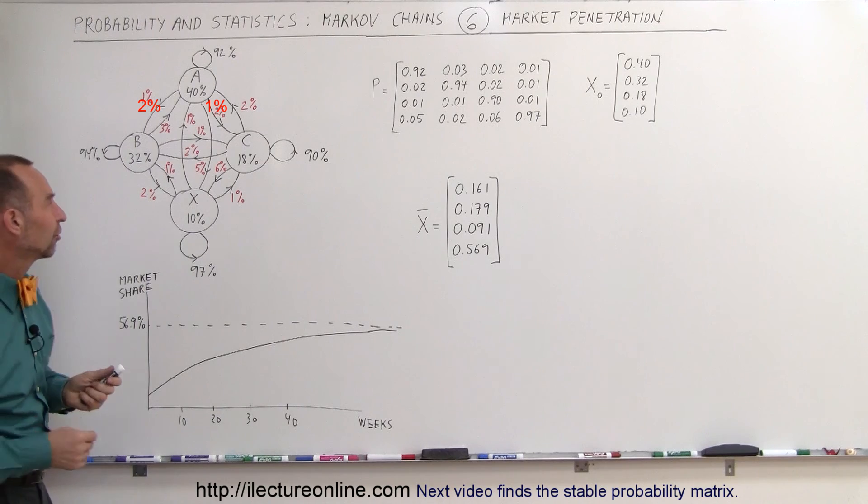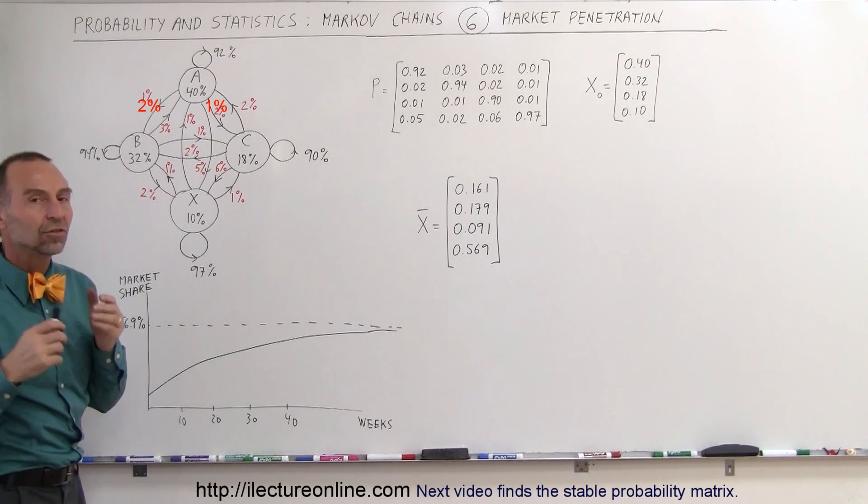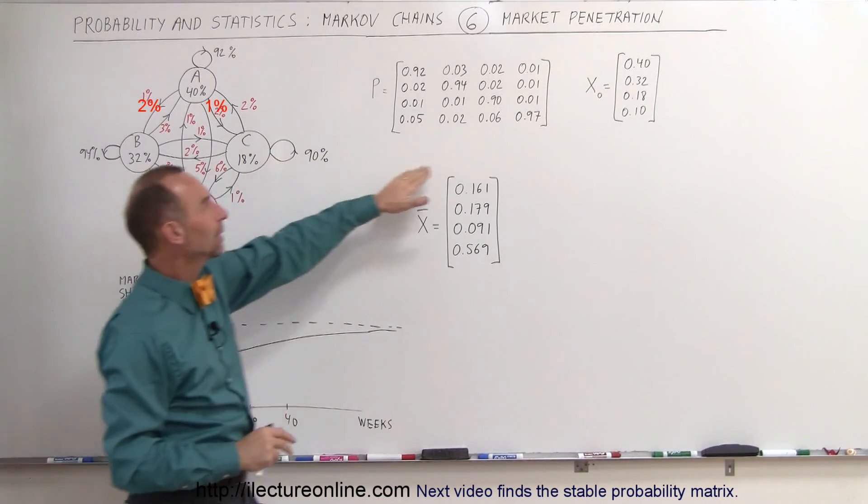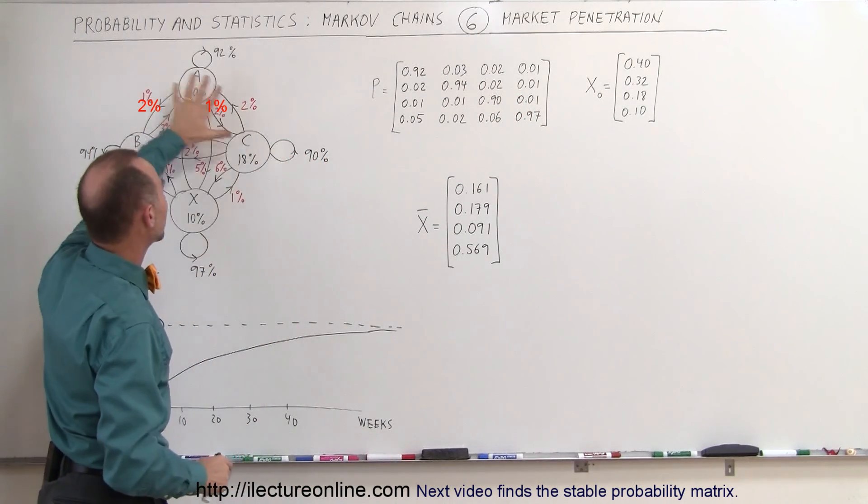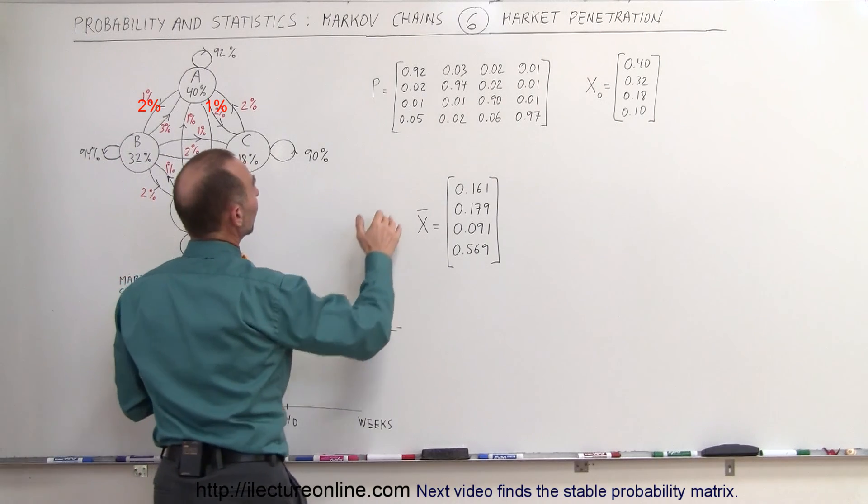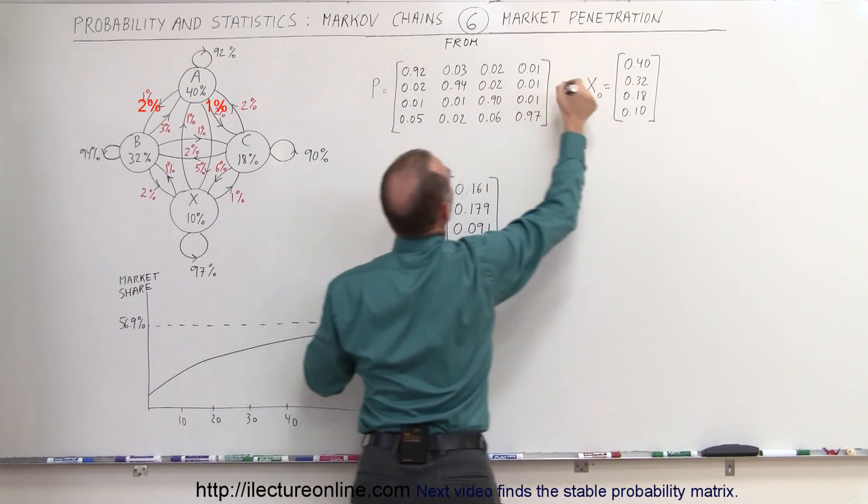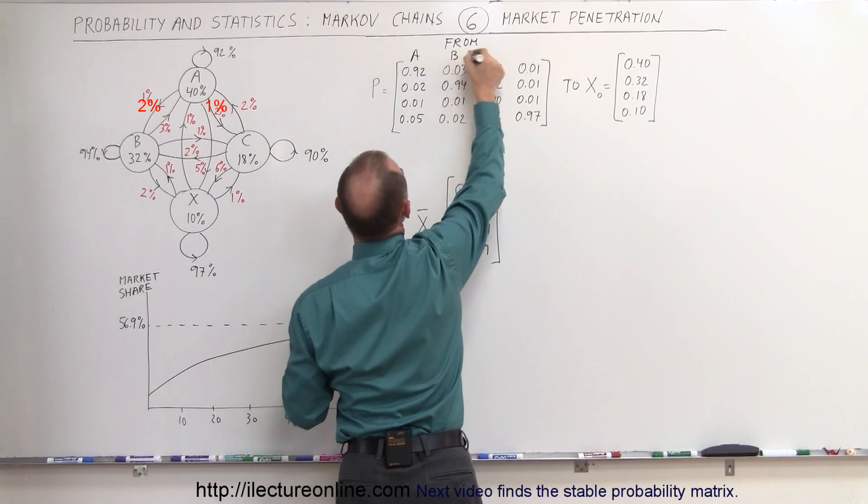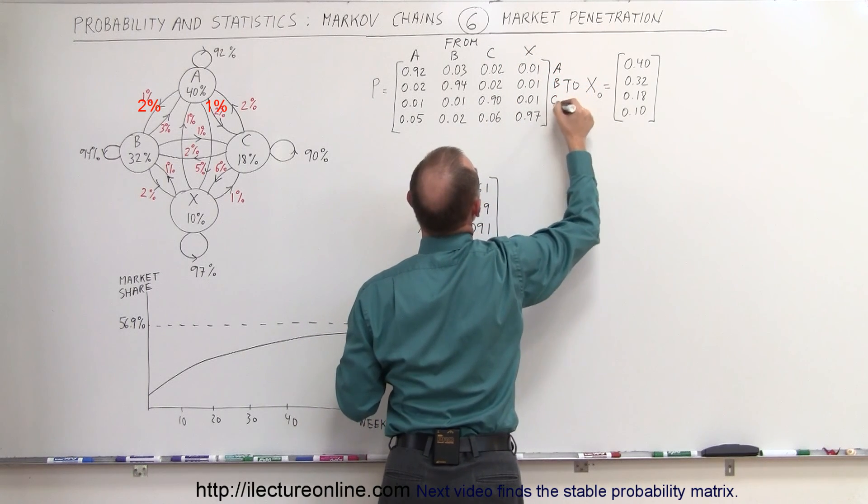We also did an analysis of the market showing which other brand people would be likely to buy when they bought one brand before. We put that into a probability matrix, so this matrix here represents what we see graphically here. Just to do one example, let's say we take brand C. Remember, this is from and this is to. So here we have A, B, C, and X, and here we have A, B, C, and X.